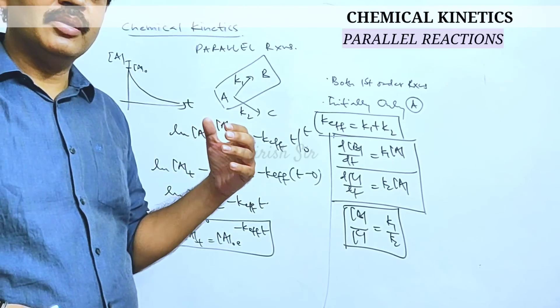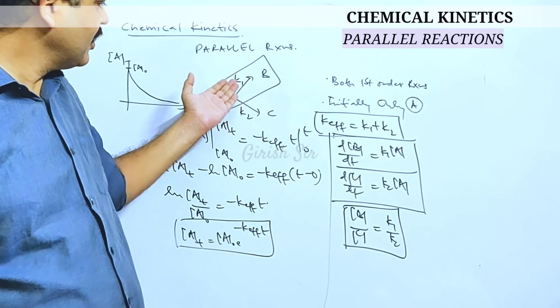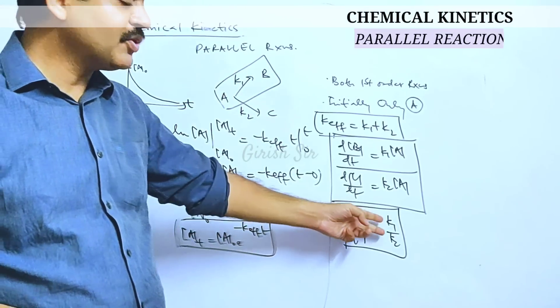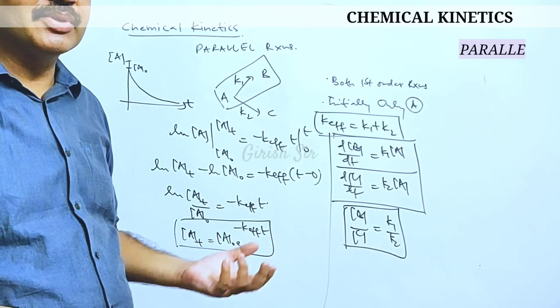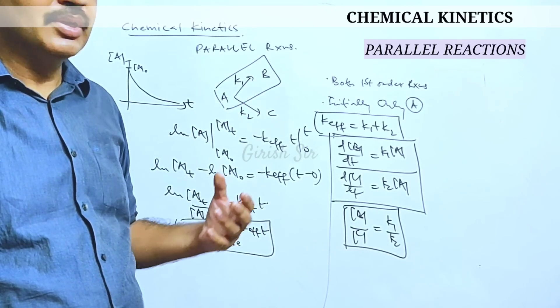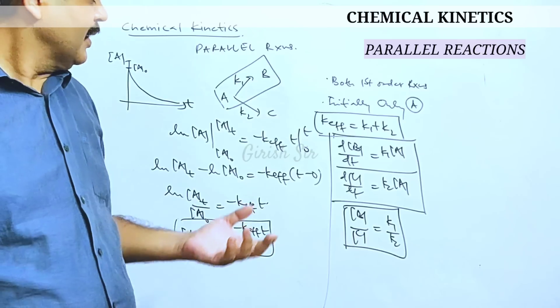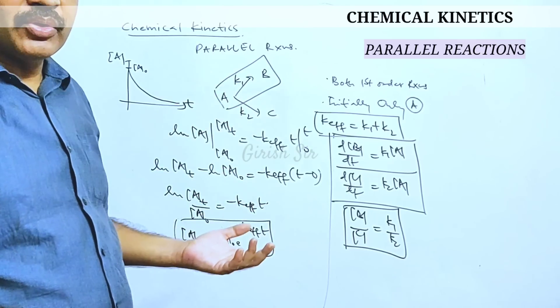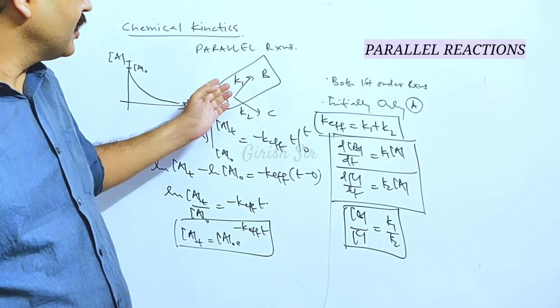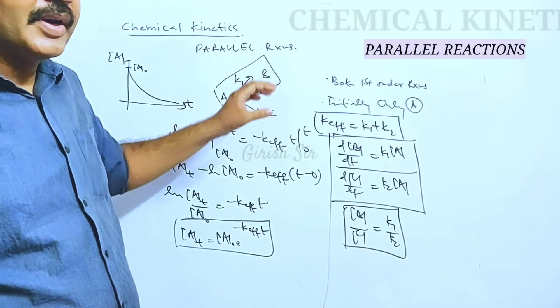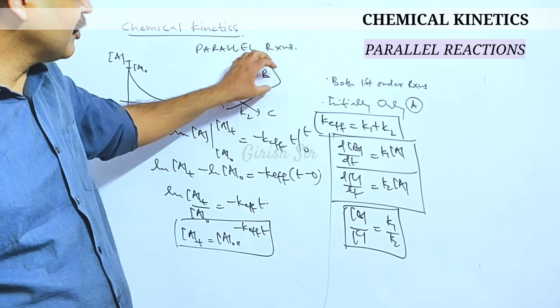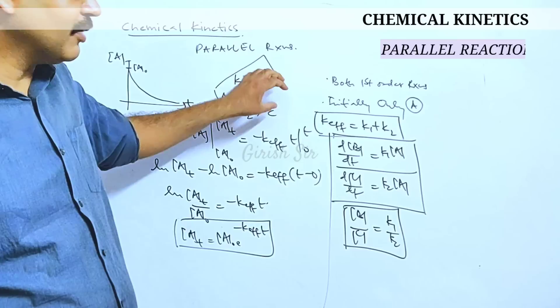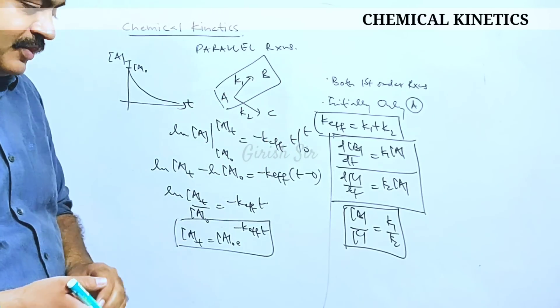So if in a particular case, K1 and K2 happen to be equal, the ratio would be one which indicates equal amounts of B and C would be produced, 50% of B and 50% of C would be obtained in the product mixture. But if K1 and K2 are not equal, then the one having higher rate constant will lead to production of higher amount of that product. So if K1 is more than K2, then amount of B would always be more than amount of C in the mixture.